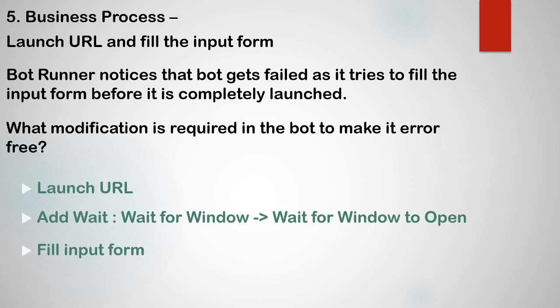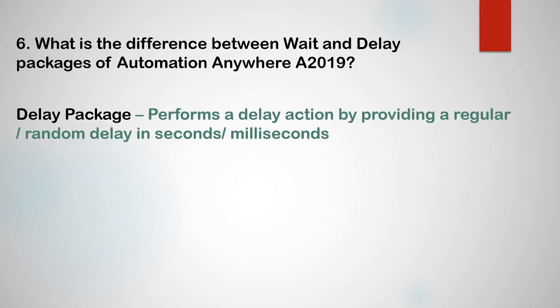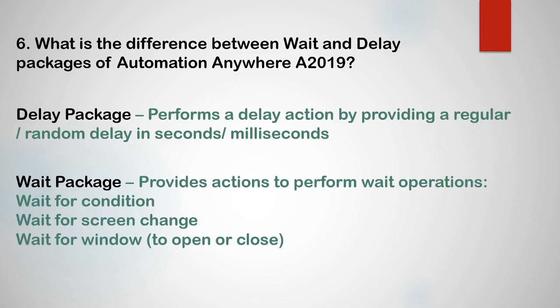There could be a follow-up question: what is the difference between the wait and delay packages of Automation Anywhere A2019? The delay package performs a delay action by providing a regular or random delay in seconds or milliseconds. Whereas the wait package provides actions to perform wait operations where you don't provide delay in seconds or milliseconds — instead you perform waits such as wait for some condition, wait for screen change, or wait for window to open or close.